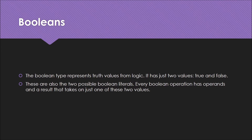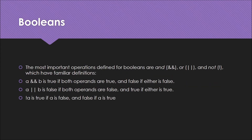The most important operators that define Boolean expressions are: first, AND, which you express using the double ampersand sign (&&). Second, OR, which you represent with two vertical bars (||). And then there is the NOT symbol, which is represented by the exclamation mark (!).